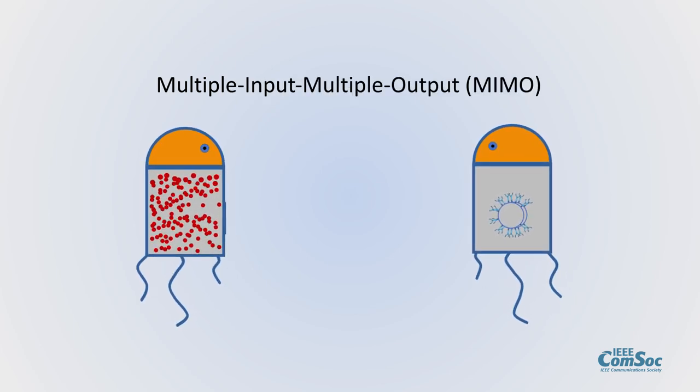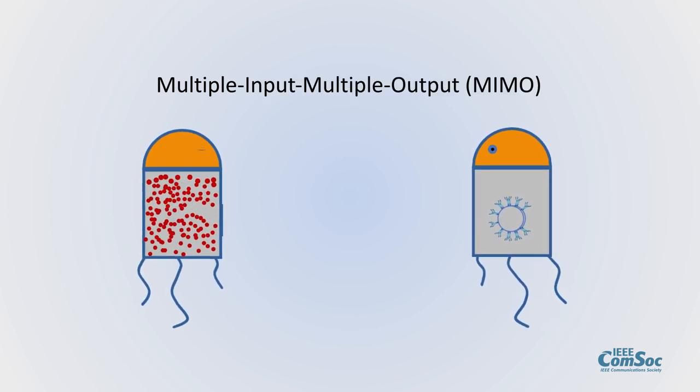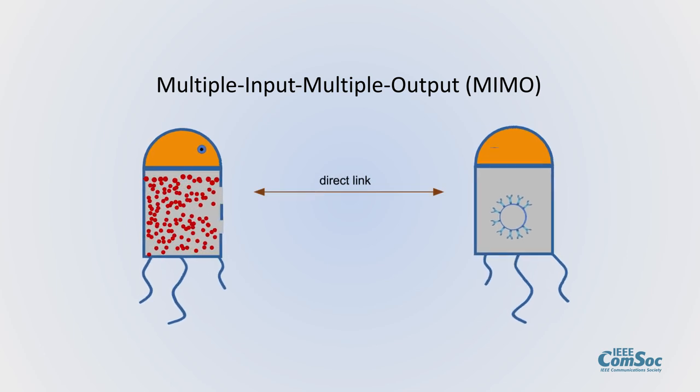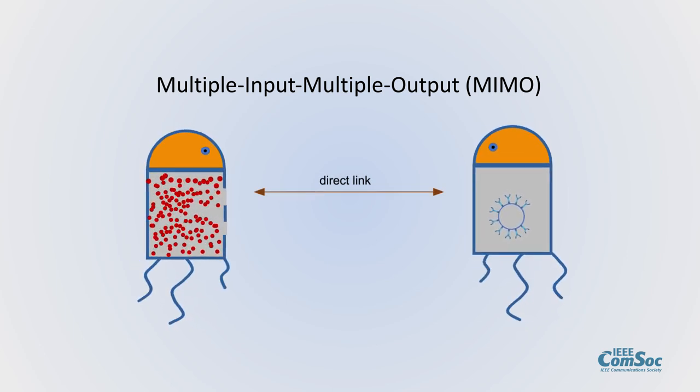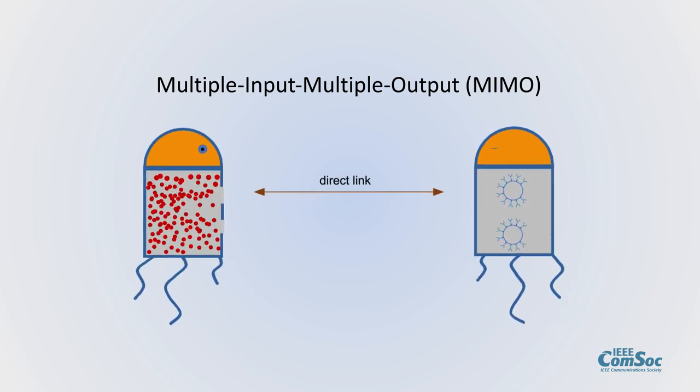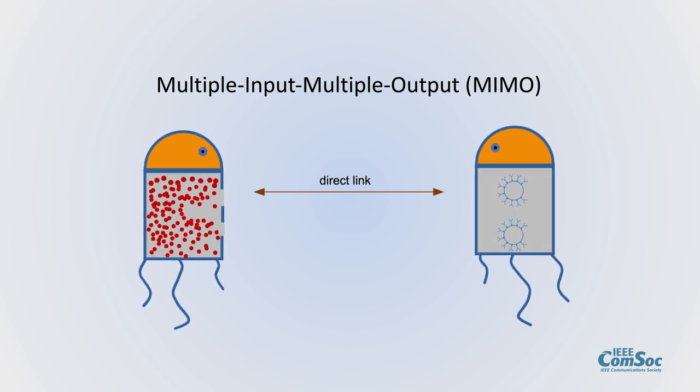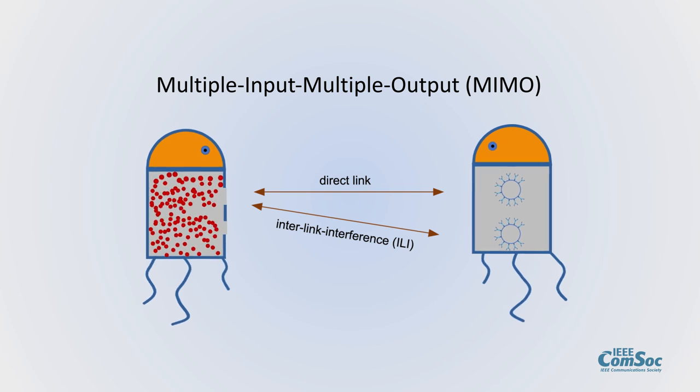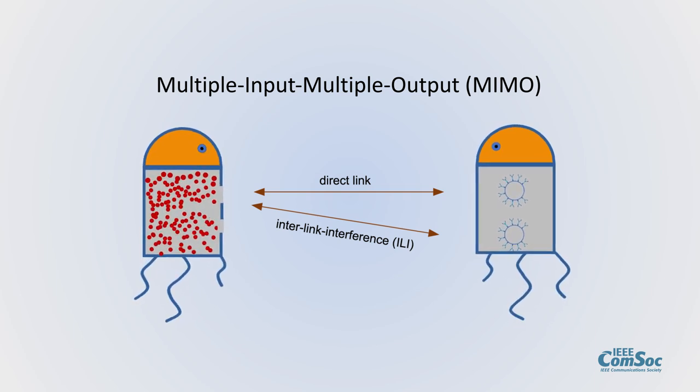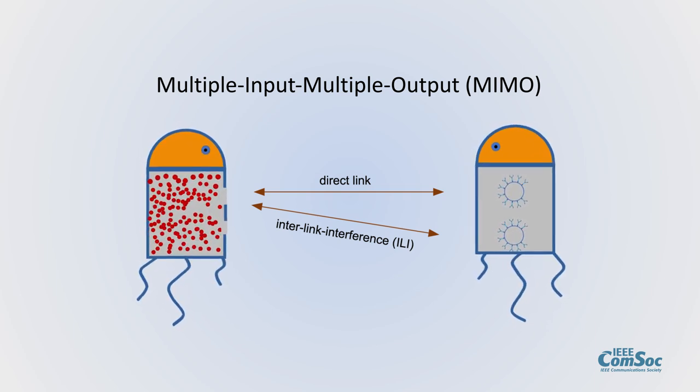In MIMO, the transmitter has multiple gates to release molecules and the receiver has multiple receptors to count them. The drawback is a crosstalk channel called interlink interference. The expected number of received molecules is related to the input matrix by the channel matrix C which includes all channel memory taps.